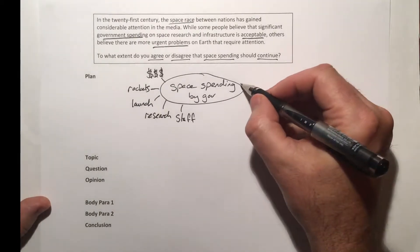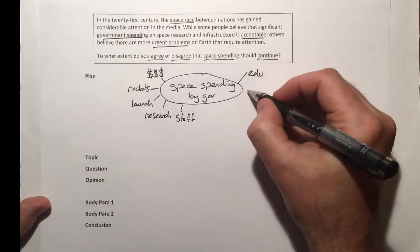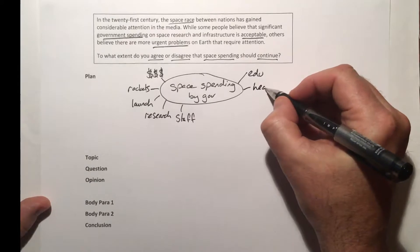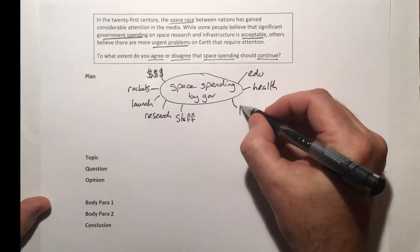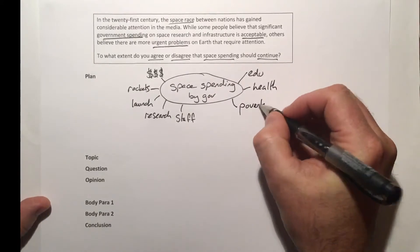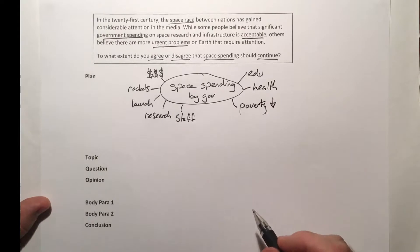Alternatively, we could be spending our money on education, health, or other things like poverty reduction. There are good things that we can actually do with this money.